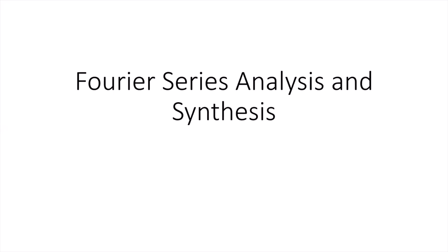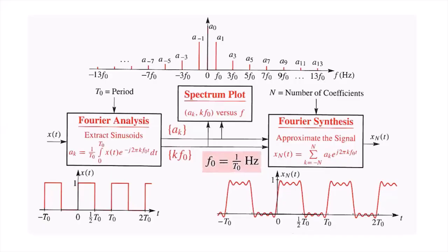First of all, we want to understand what is the difference between analysis and synthesis. To understand, we have to see this simple diagram. In the Fourier analysis, the input of the system is a time domain signal, and after analysis we get complex amplitude ak and frequency components. You can simply say analysis is the forward transform.